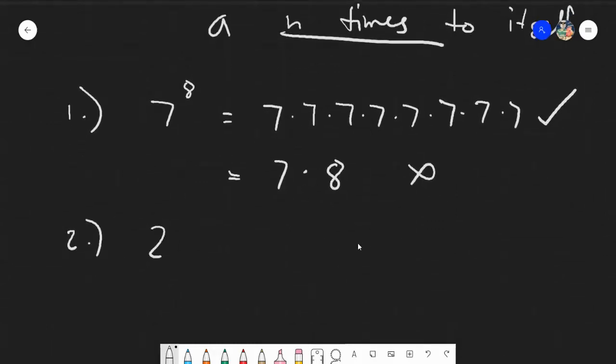Next one. So we have 2 raised to 2. So this one, you will multiply 2 twice to itself. Again, it's not 2 times 2, but it's just simply 2 multiplied twice to itself.